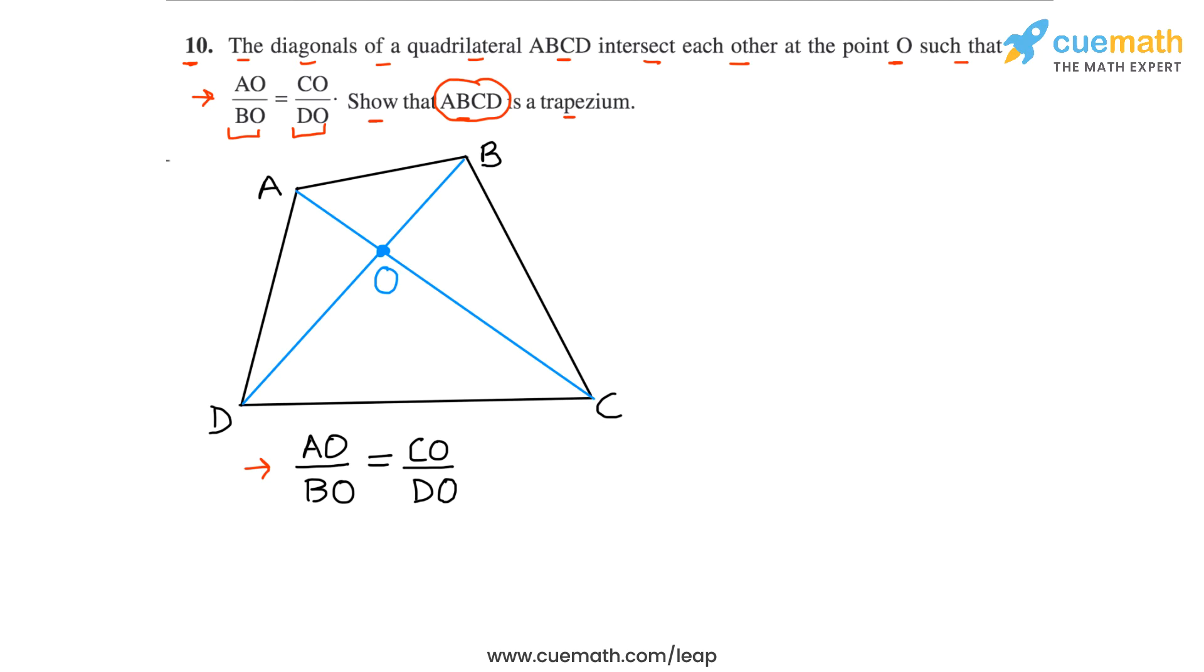In this problem it is the other way around. We are given this equality of ratios AO by BO equal to CO by DO and we have to prove that ABCD is a trapezium. So we will prove that AB must be parallel to DC.